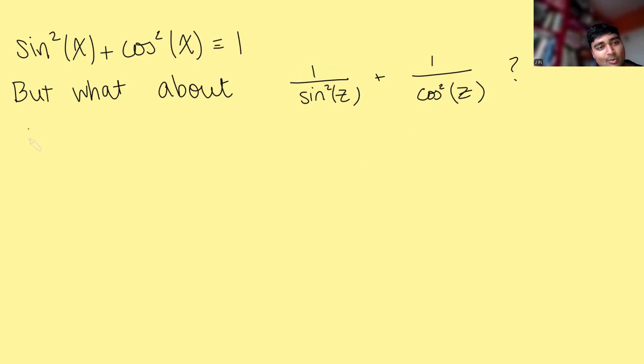So let's make this thing here 1. So 1 over sine squared z plus 1 over cos squared z. Let's make that 1. Now we're going to just multiply both sides by sine squared z and cos squared z. So on the left-hand side, I'm just left with cos squared z plus sine squared z. And on the right-hand side, I just have sine squared z times cos squared z.